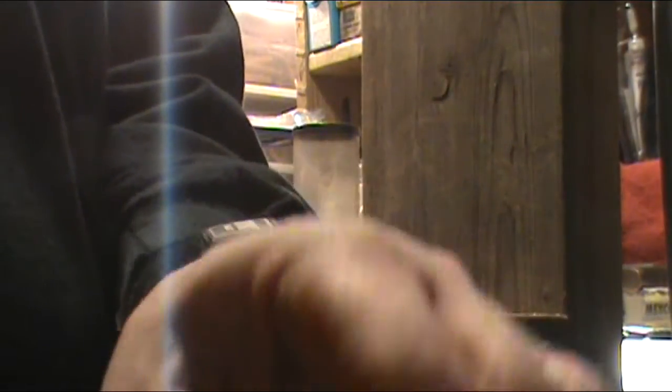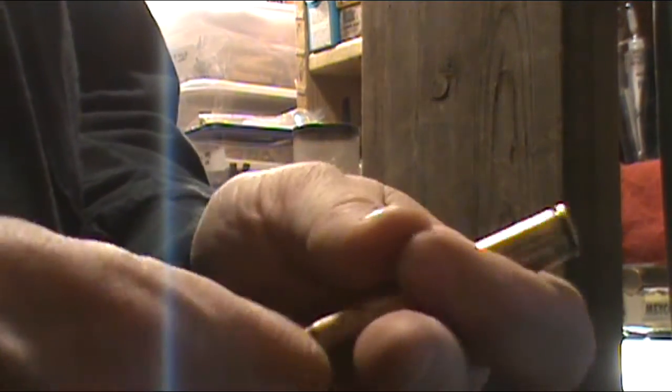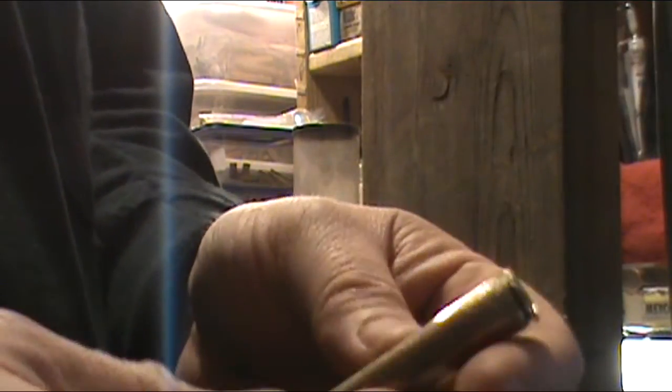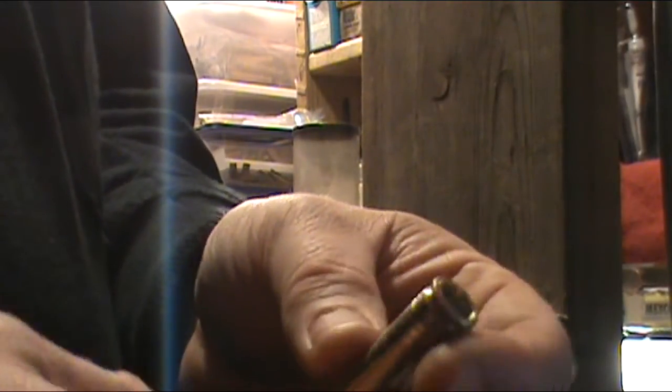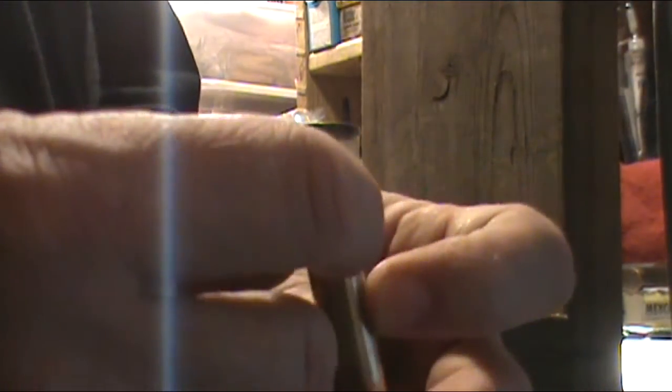This will drop right down into the Loadmaster. And then your good primers that get pushed through your priming arm will fall in here. And then the wire, as you take shell plate off, you pick this up out of your Loadmaster and dump your good primers back out. You're not wasting any.